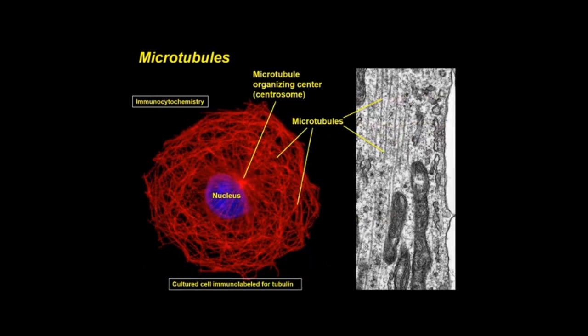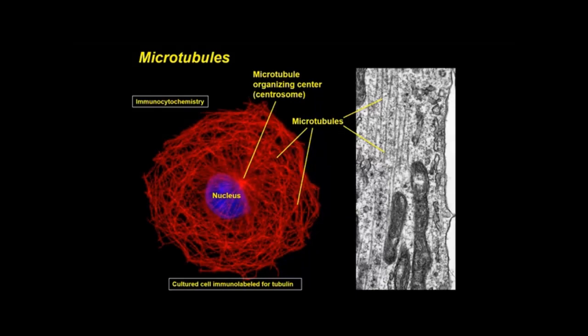The cytoskeleton provides structure for a cell and consists of microtubules, intermediate filaments, and microfilaments. Microtubules are hollow tubes 25 nanometers in diameter, distributed in most cells, and are abundant in neurons and dividing cells. They are the main structural component of centrioles and cilia, and their walls are composed of the protein tubulin. Immunocytochemistry is a powerful research and diagnostic labeling technique used to show proteins like tubulin and other molecules in cells.